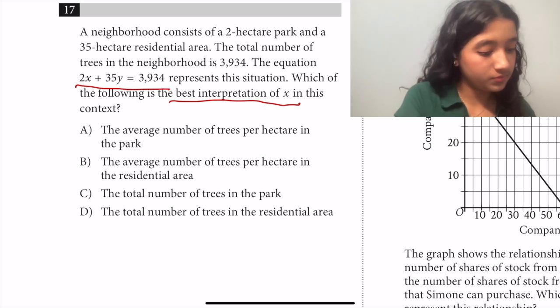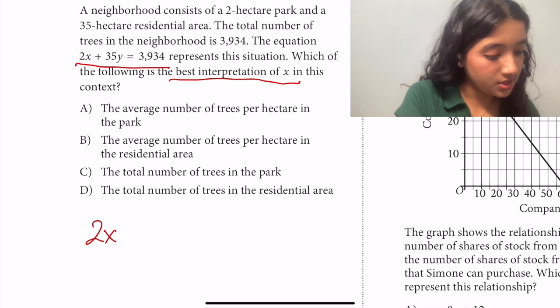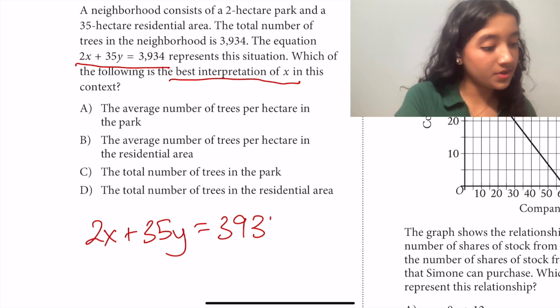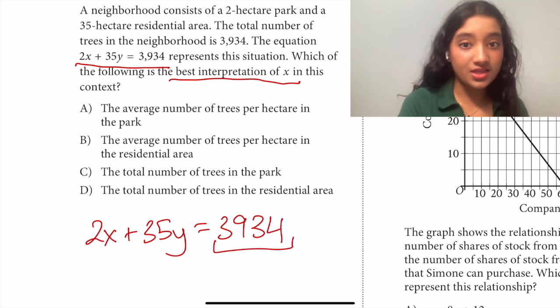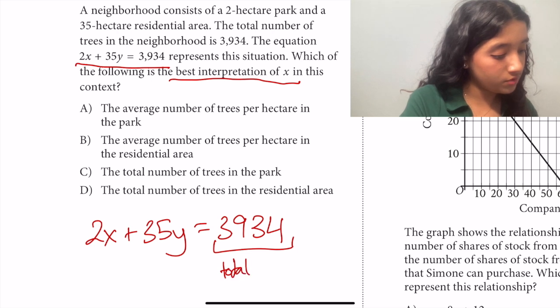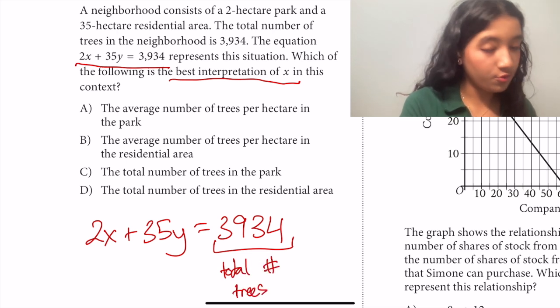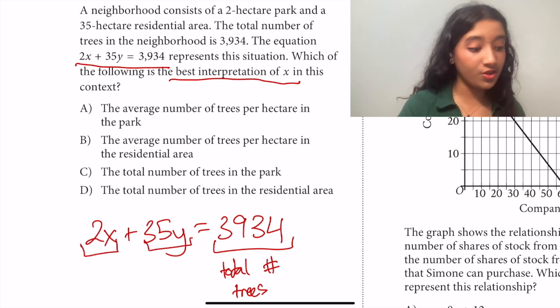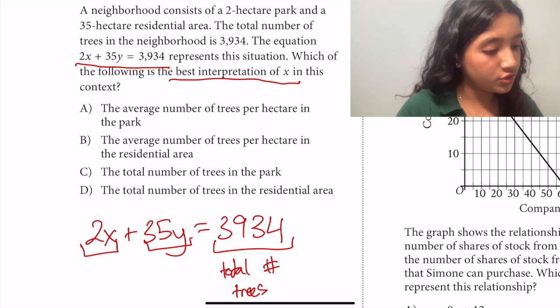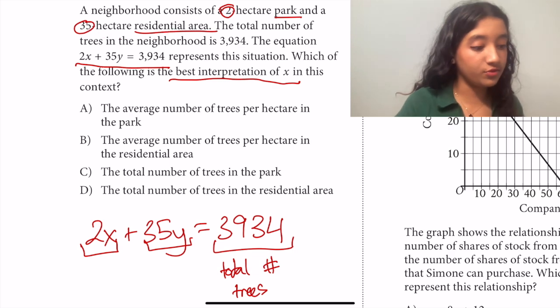So let's break down this equation. We have 2x + 35y equals 3,934, and this is the total number of trees in the neighborhood. So if we have total number of trees, then we can also see that each of these represents a number of trees and we're adding the two together to get the total number of trees. So let's also correspond the numbers we have. If we have a 2-hectare park and a 35-hectare residential area, then we can see that the 2 is going to relate to the number of trees in the park and 35 represents the number of trees in the residential area.